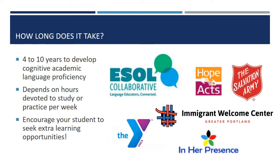Reaching advanced fluency or a near-native ability to communicate in English might take someone four to ten years. This depends on how many hours you study per week and the nature of your study or exposure to English. Some research suggests that five hours of language study a week might lead to eight years to reach fluency. Ten hours a week would result in a four-year process to reach fluency, and so on.